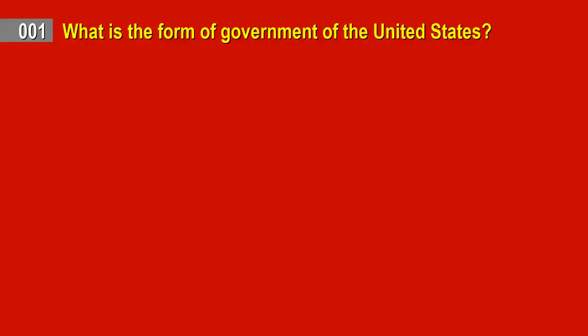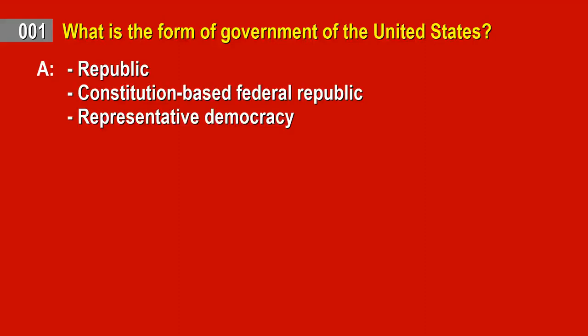Question 1. What is the form of government of the United States? Answer: Republic. Constitution-based federal republic. Representative democracy.